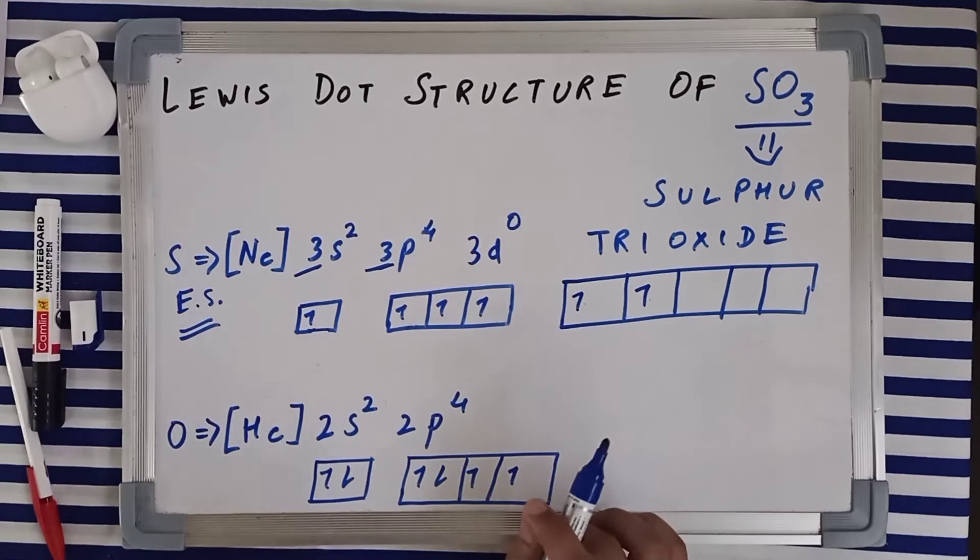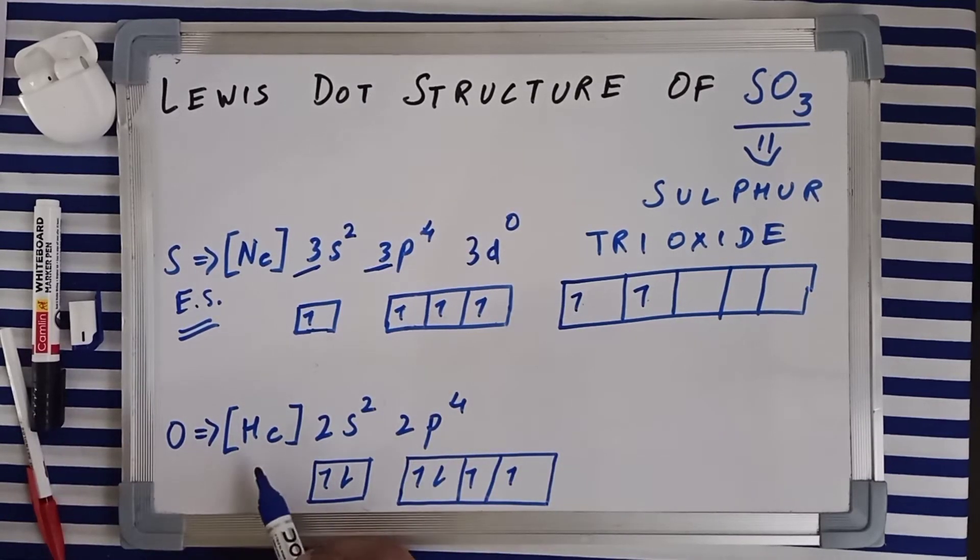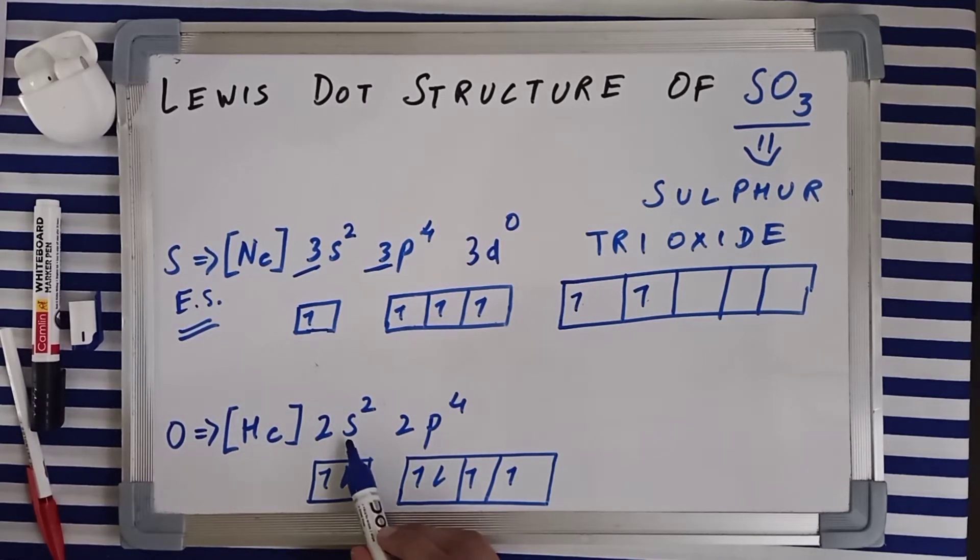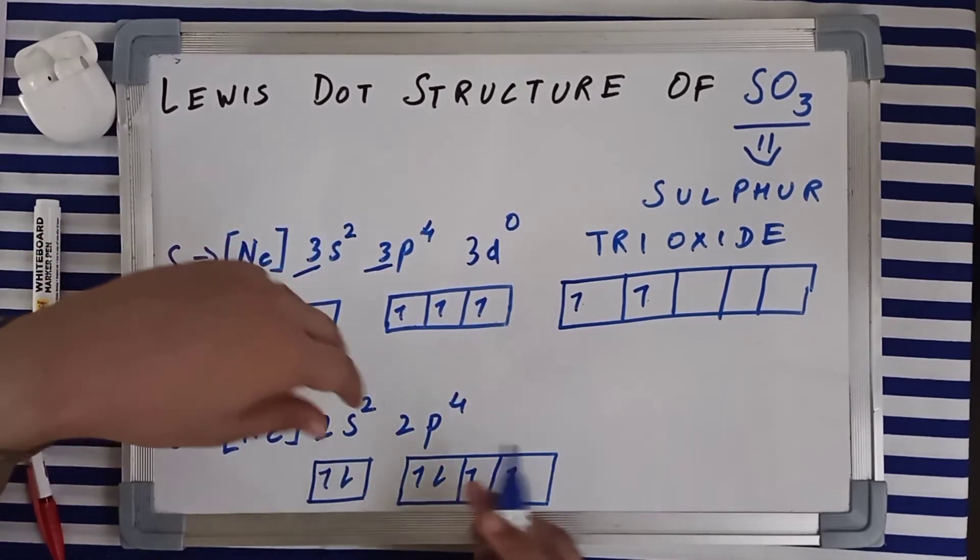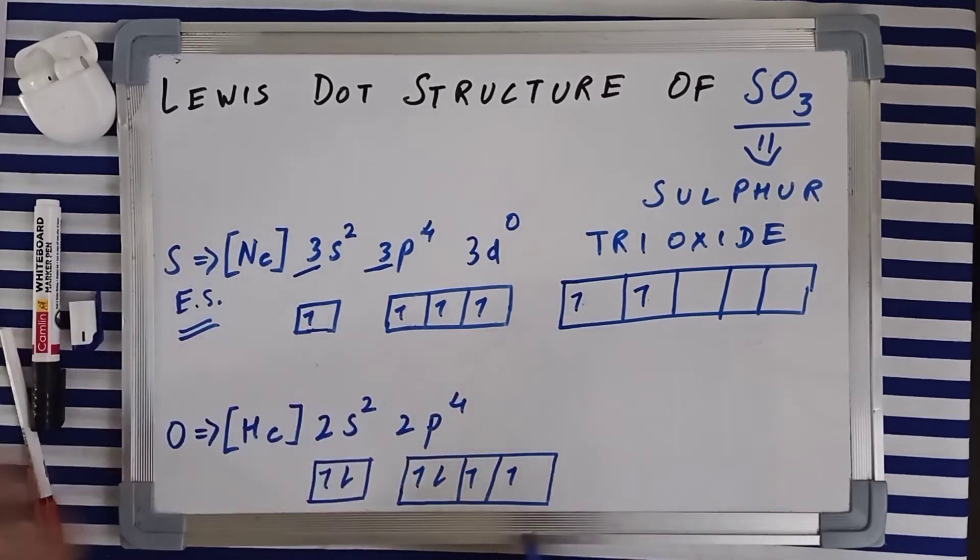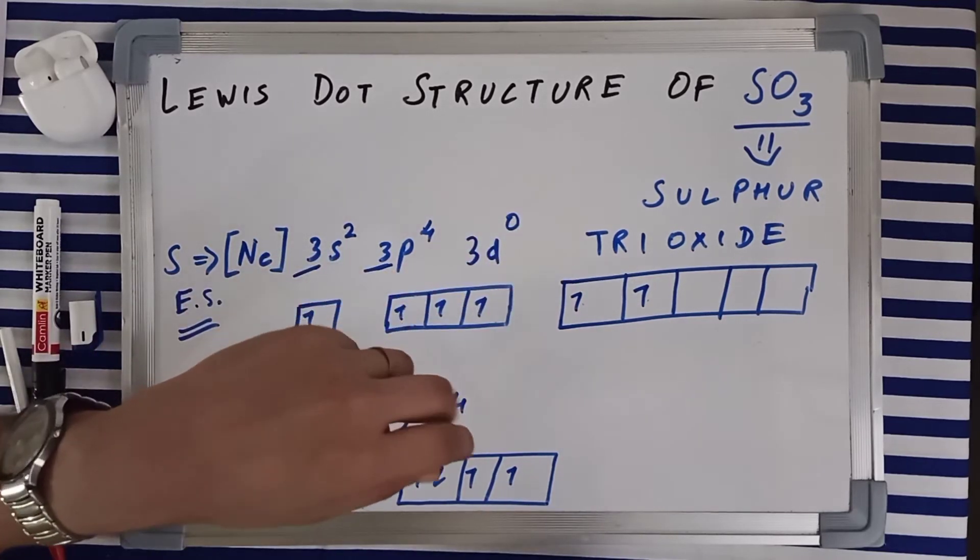Now talking about the electronic configuration of oxygen, its electronic configuration is inert configuration of helium and then 2s² and 2p⁴. Since the second shell does not have any d subshell, oxygen cannot make its electron jump and reach an excited state. So it has got two electrons in the 2s subshell and four electrons in the three orbitals of the 2p subshell. There are two unpaired electrons, which means oxygen will make two bonds. Talking about the number of valence electrons, it's very simple, 2 plus 4, six valence electrons.